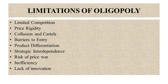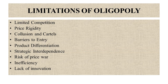Next is product differentiation. Oligopolistic firms often engage in product differentiation strategies. While this can benefit consumers by offering a variety of products and services, it can also lead to brand loyalty and reduced price sensitivity, further limiting competition. Another limitation is strategic interdependence: firms in oligopolistic markets are highly interdependent, meaning their actions directly influence each other's profits and market outcomes. This strategic interdependence can lead to complex decision-making processes and uncertainty about competitors' reactions.